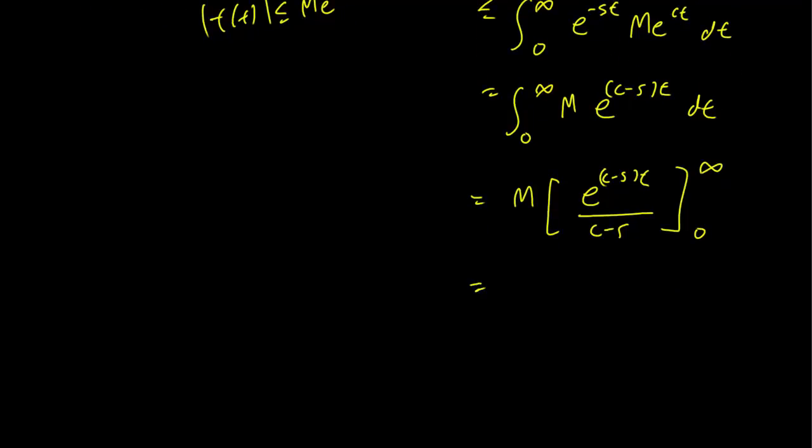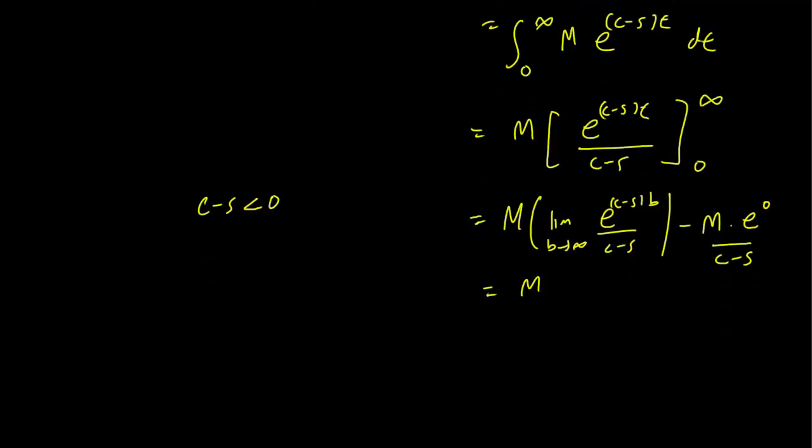This is going to be M times the limit as b goes to infinity of e^((c-s)b) over (c-s) minus M e^0 over (c-s). So we need to assume here that c minus s is negative. If we have this assumption, then this exponential goes to 0. If not, it goes to infinity. And we have M over (s - c). So c minus s is less than 0 is the same thing as saying that s is greater than c. So this gives us a condition for our s.